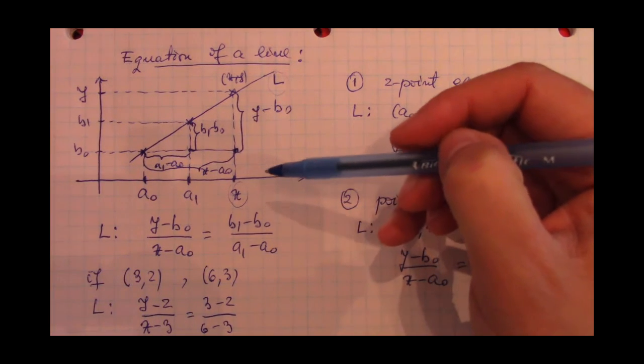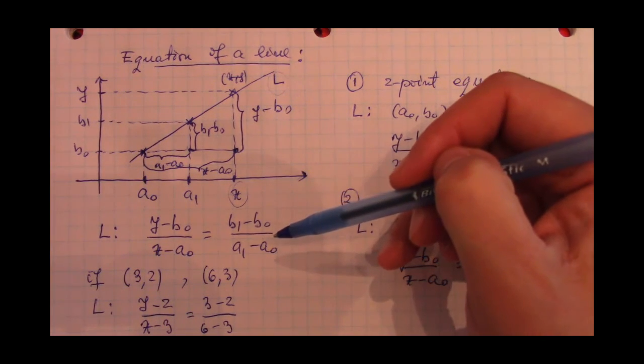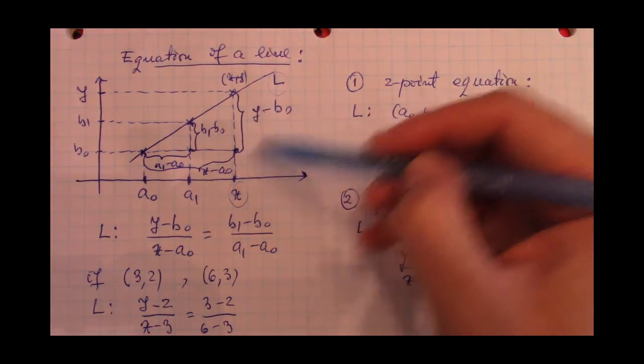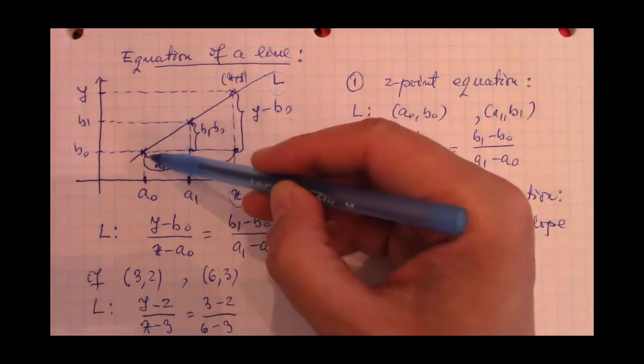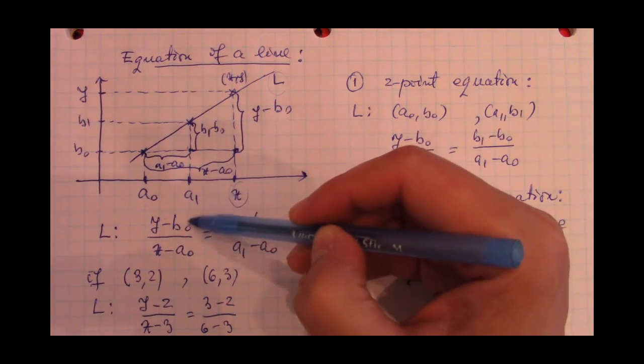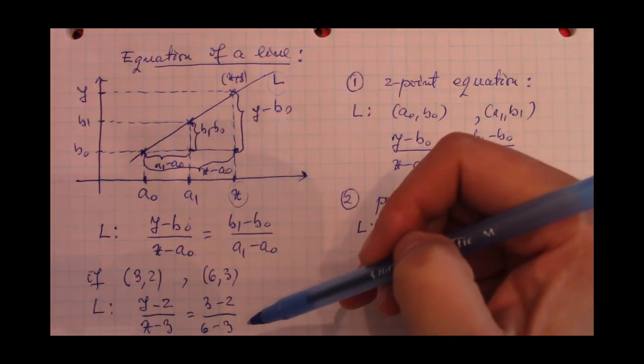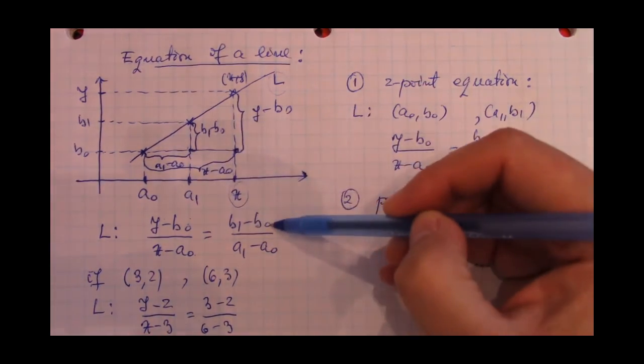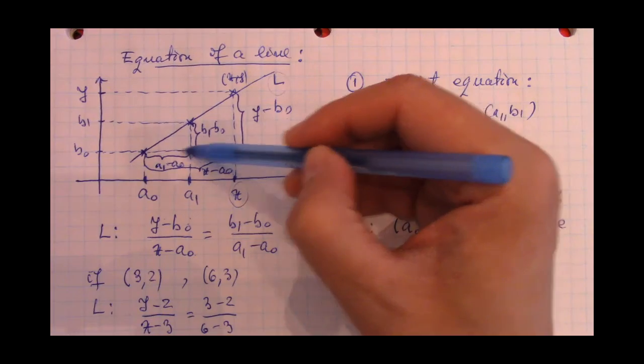So if we write the similarity ratio between these two triangles, we are going to get this length, which is y minus b0 over this length, which is x minus a0. So y minus b0 over x minus a0 is going to be equal to b1 minus b0 over a1 minus a0.